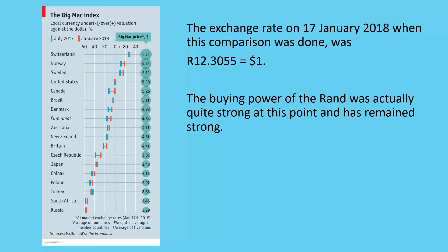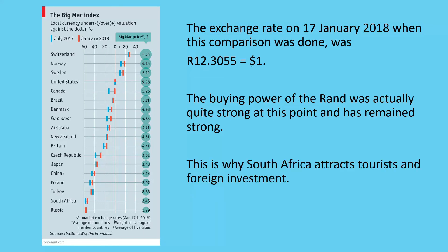What this actually tells us is that the buying power of the rand was quite strong at this point, and it has remained pretty strong. That's why South Africa attracts tourists and foreign investment — because what you get for your foreign money, like dollars, euros, and pounds, is good. The rand is quite badly undervalued. Looking at the chart, it's just over 50% undervalued, meaning the exchange rate should have been far closer to 6 rand to the dollar at this point, depending on cost of living.